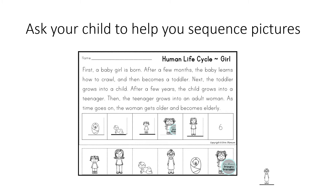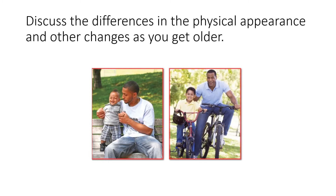Then the teenager grows into an adult woman. As time goes on, the woman gets older and becomes elderly. Discuss the differences in physical appearance and other changes as you get older.